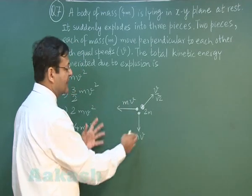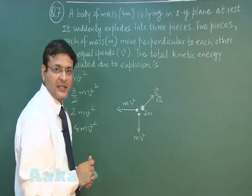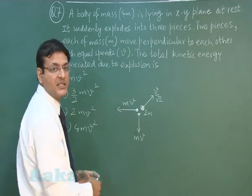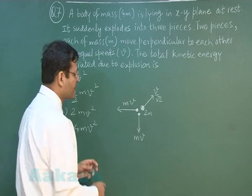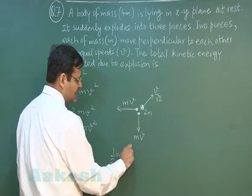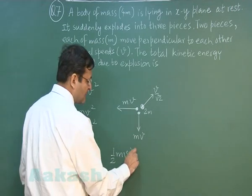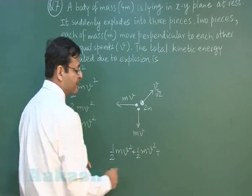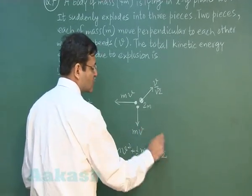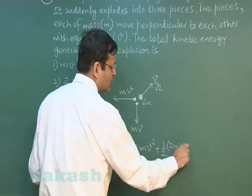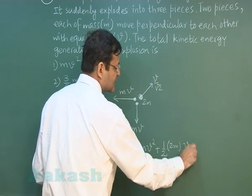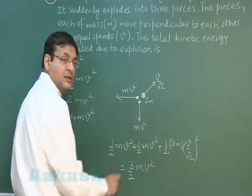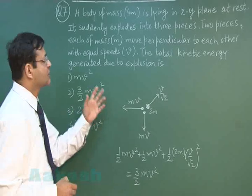You have to calculate the kinetic energy of these three, and that will be the energy generated in the explosion because initially they were at rest. The energy of this mass is (1/2)mv², energy of the second mass is also (1/2)mv², and the energy of the third mass is (1/2)(2m)(v/√2)². In total, you will be getting this to be equal to (3/2)mv². This is the answer to this particular question.